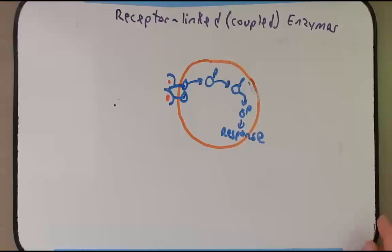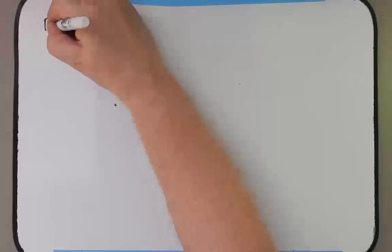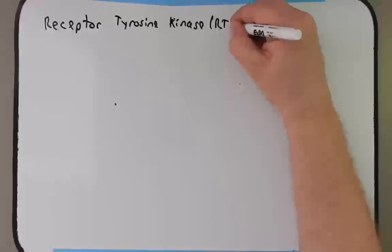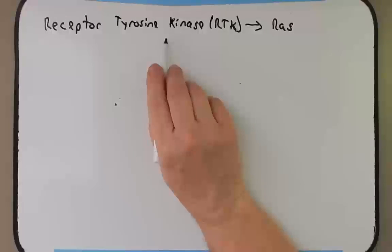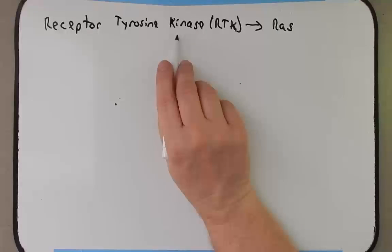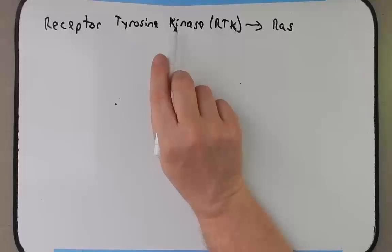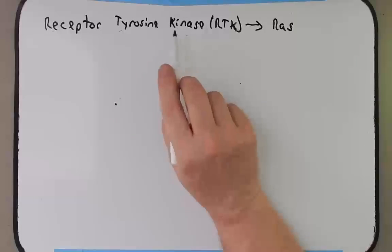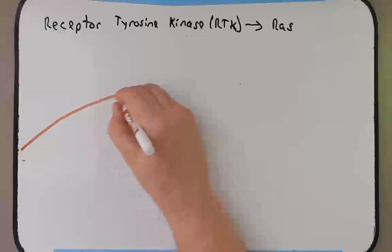To demonstrate this, I want to talk about a specific receptor linked enzyme called receptor tyrosine kinases, which we'll call RTK. Tyrosine kinases by themselves are enzymes that add a phosphate group to tyrosines — kinases are enzymes that add phosphate groups, and tyrosine kinases are specific ones that add phosphate groups to tyrosines. Adding the word receptor to it tells us that this tyrosine kinase acts as a receptor — it binds some kind of a signal.